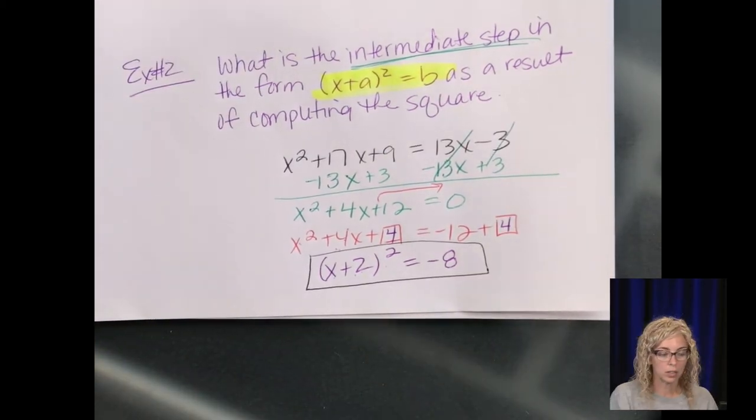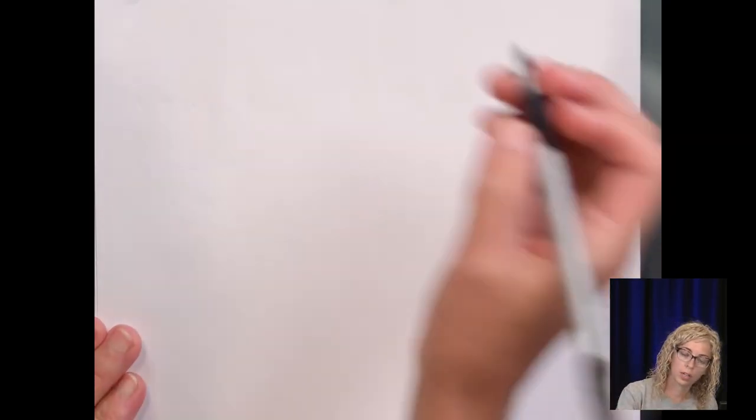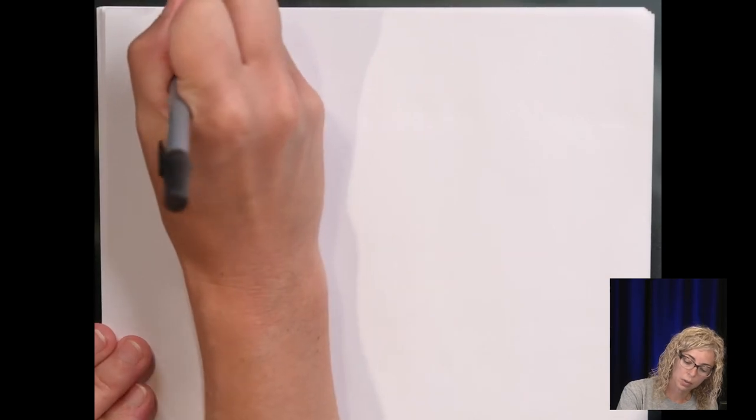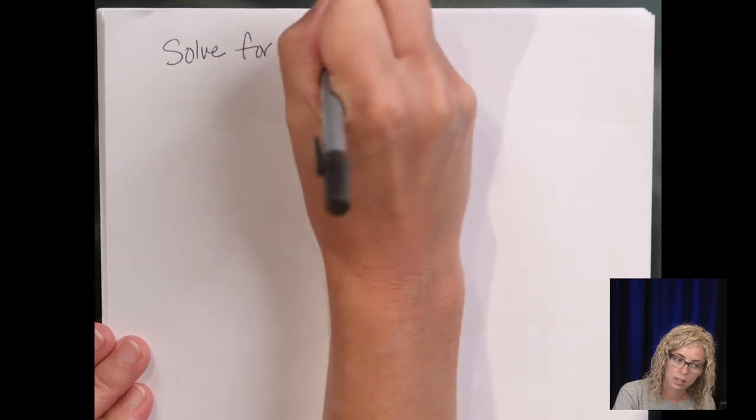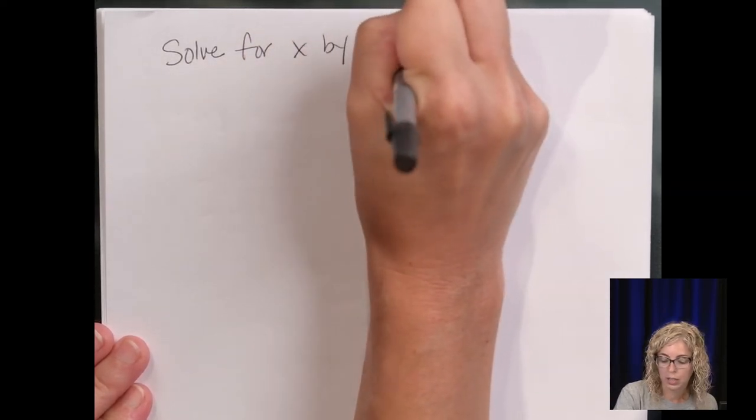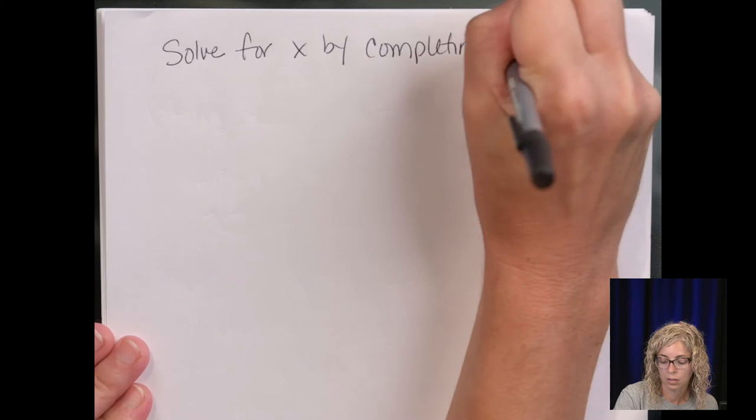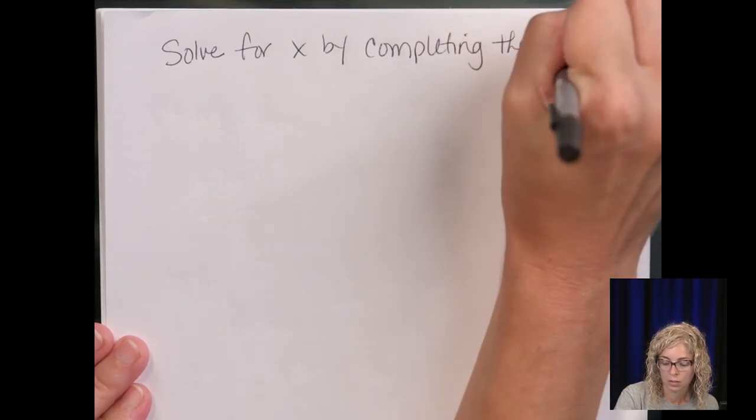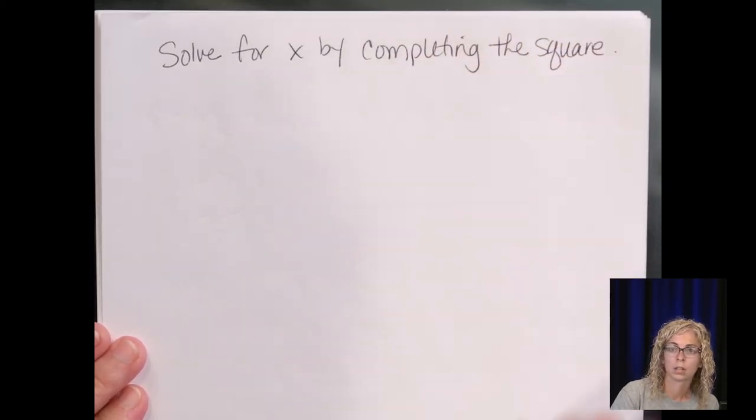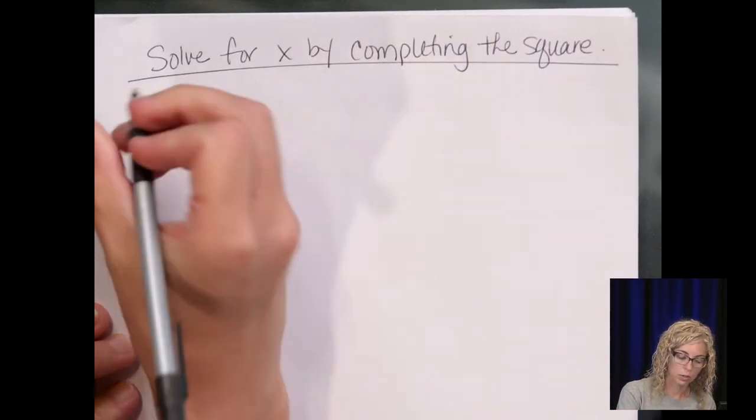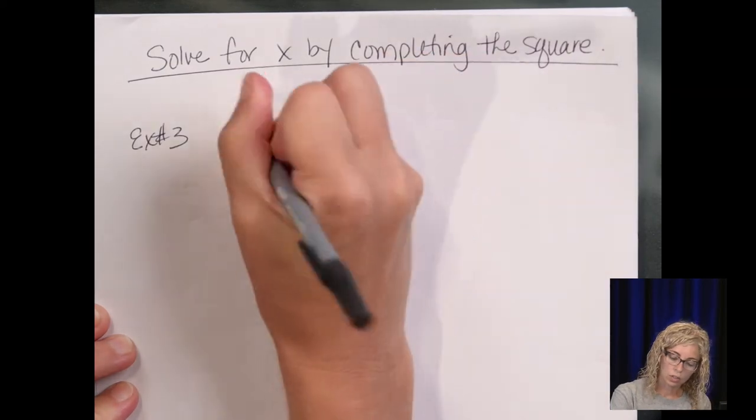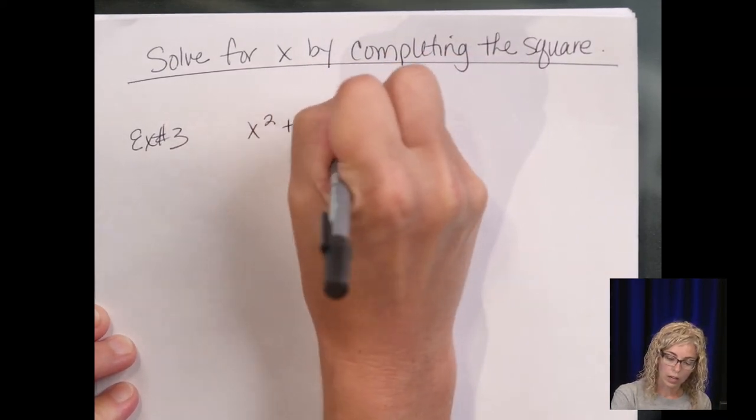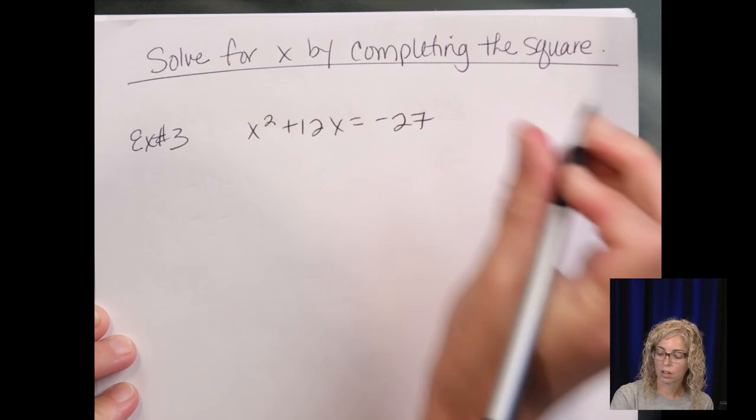We're going to complete the square here, so we're going to take it all the way through. We're going to look at some examples. I'll write the directions for all of them: solve for x by completing the square. This will be example 3.